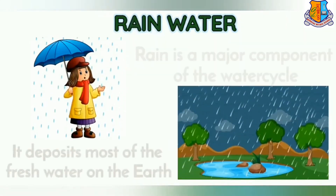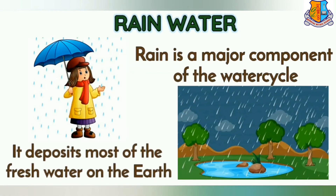Rain Water: Rain is the main source of water. It deposits most of the fresh water on the earth.